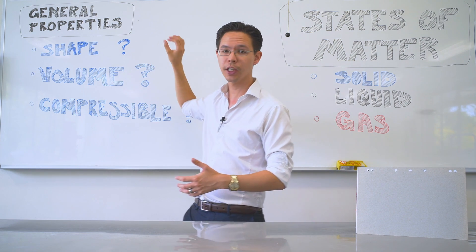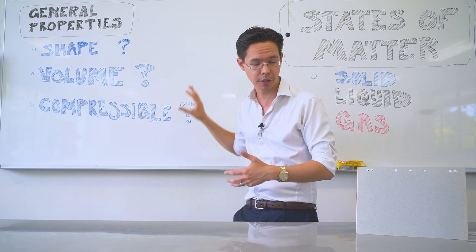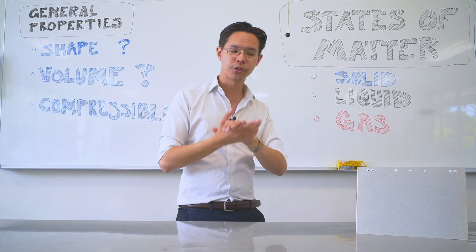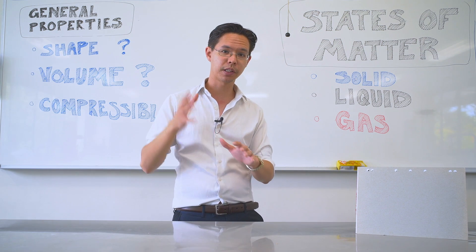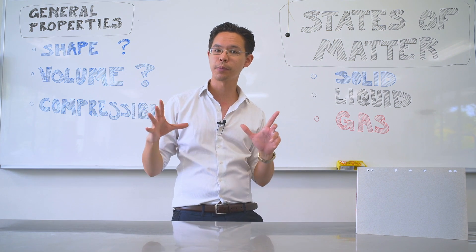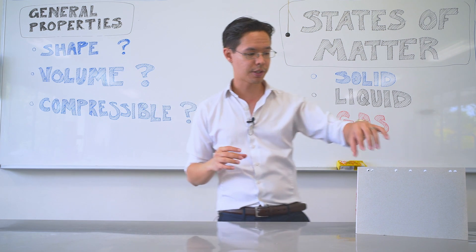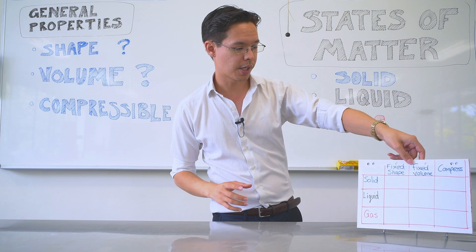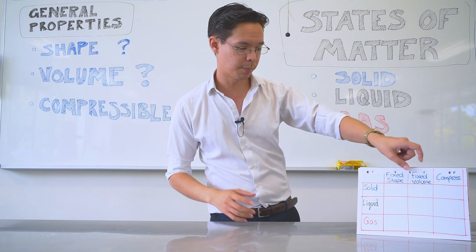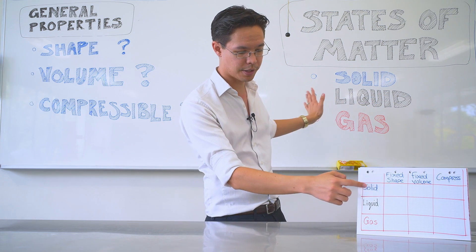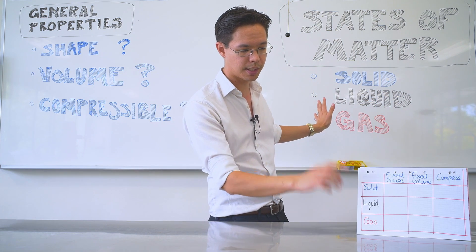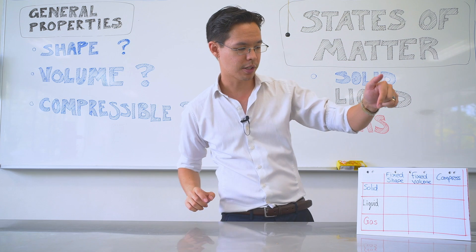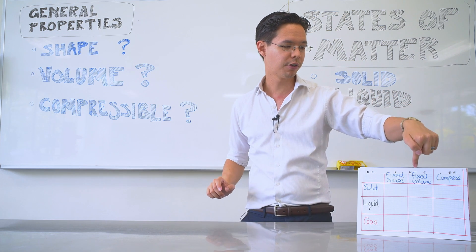Do they have a fixed shape and volume, and are they compressible, and so on. To help make things a bit clearer, I've got this card here as a summary, which we will use as a small table — with solid, liquid, and gas — and whether they are fixed in shape,